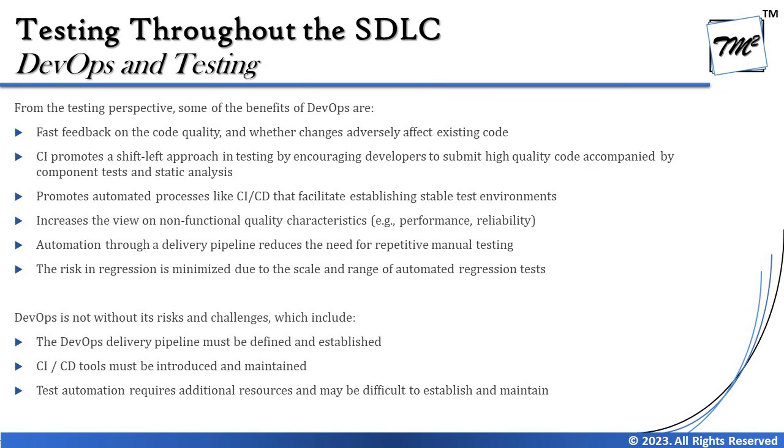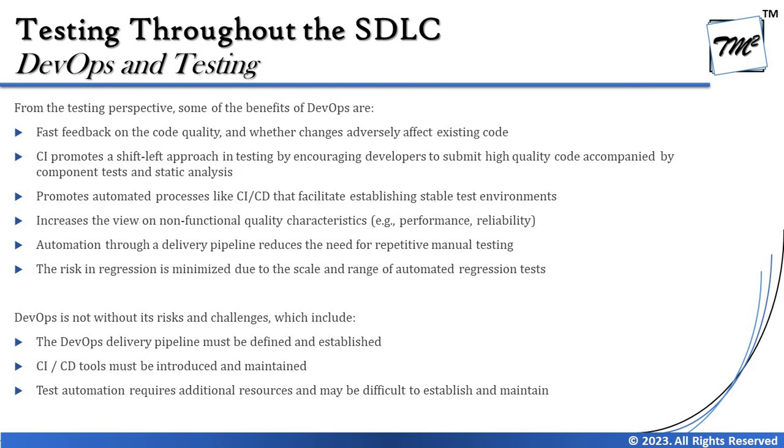Also, CI promotes a shift-left approach in testing by encouraging developers to submit high-quality code accompanied by component tests and static analysis. Some of the activities we look forward to automating as part of our CI pipeline include static analysis, unit test cases, regression test suite, and many other things which are part of this pipeline.